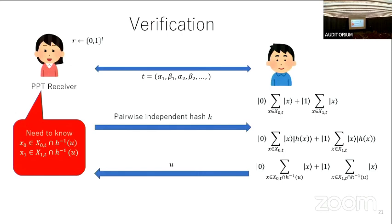Question: In your construction you consider inefficiently verifiable post-processing. What if we consider heavy pre-processing — the verifier does a long computation before the interaction, and the final verification is efficient? Answer: That's a very interesting question. All known constructions of PoQ require finding some preimage, which requires inefficient computation after the transcript is generated. But pre-processing is a very interesting idea.